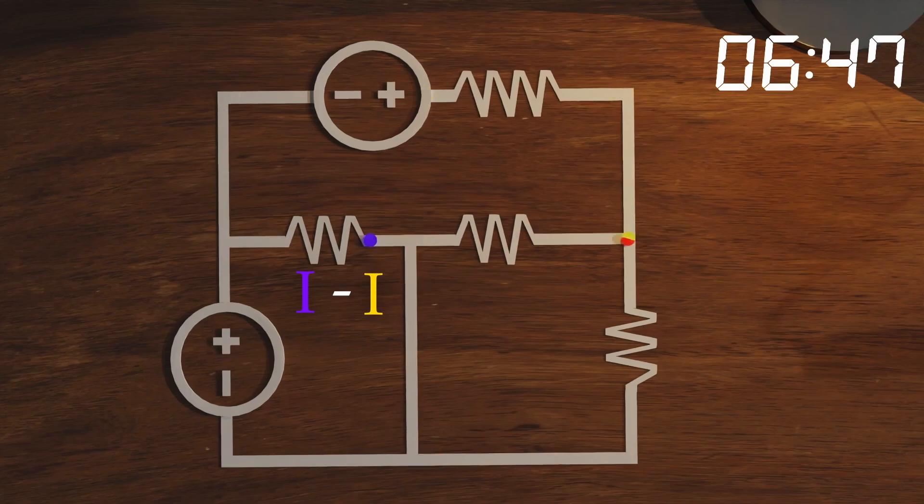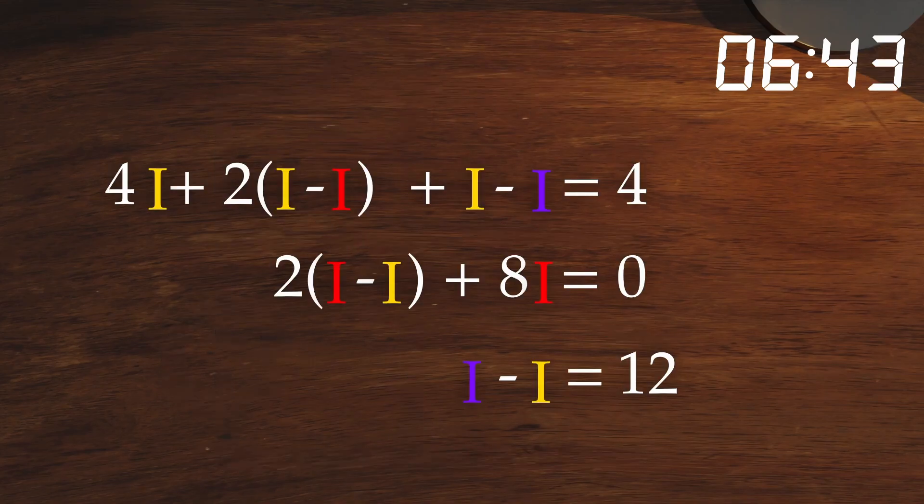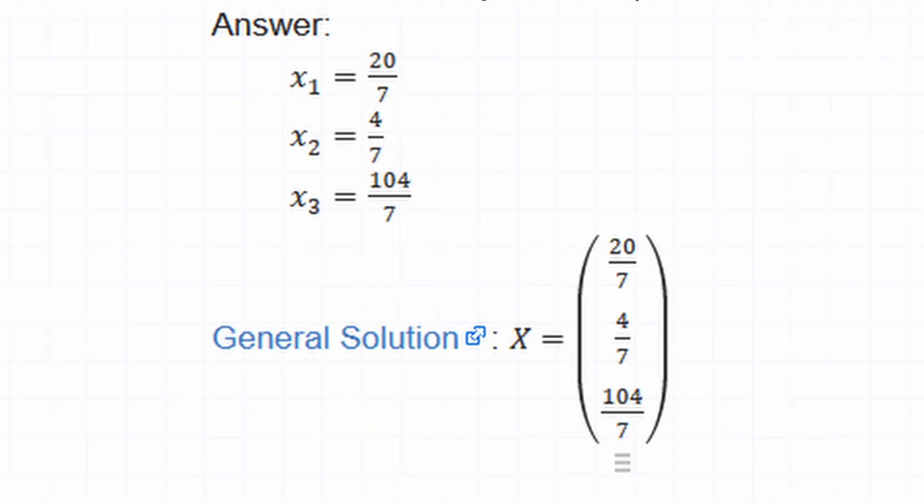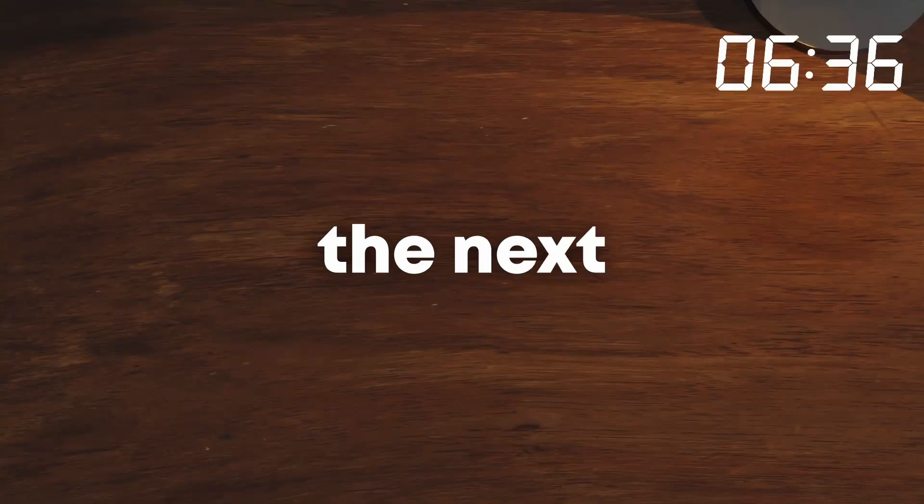We switch the signs depending on which loop we're looking at. Now you have some equations. All you have to do is just solve them.